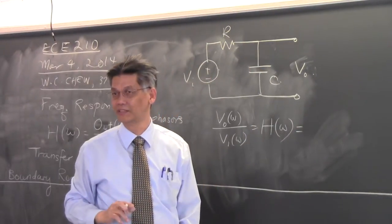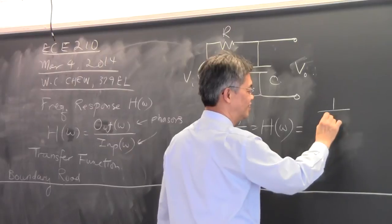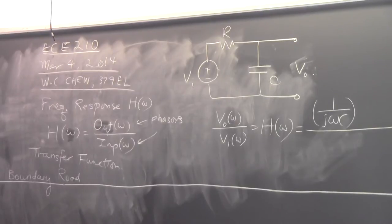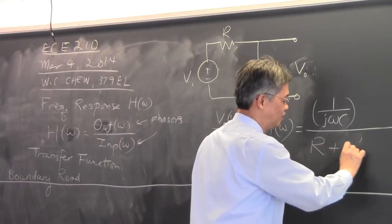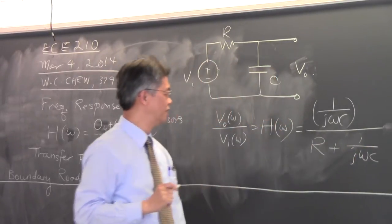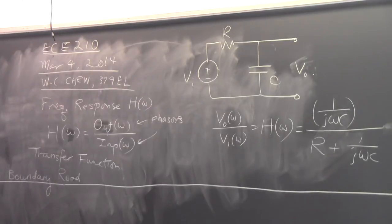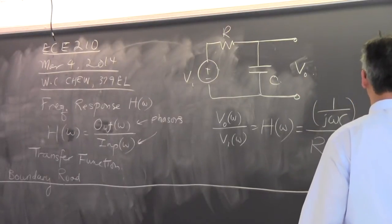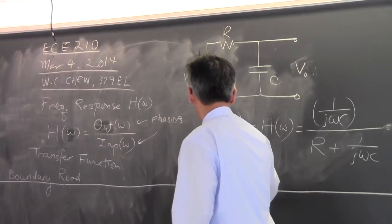The impedance of the capacitor is 1 over jωC. Using the voltage divider formula, you divide by the sum of the two impedances. That is the ratio of the output to the input. You can simplify this and write it as 1 over jωRC plus 1. You can plot the magnitude of H of omega — taking the magnitude gives you 1 over the square root of ω²R²C² plus 1.